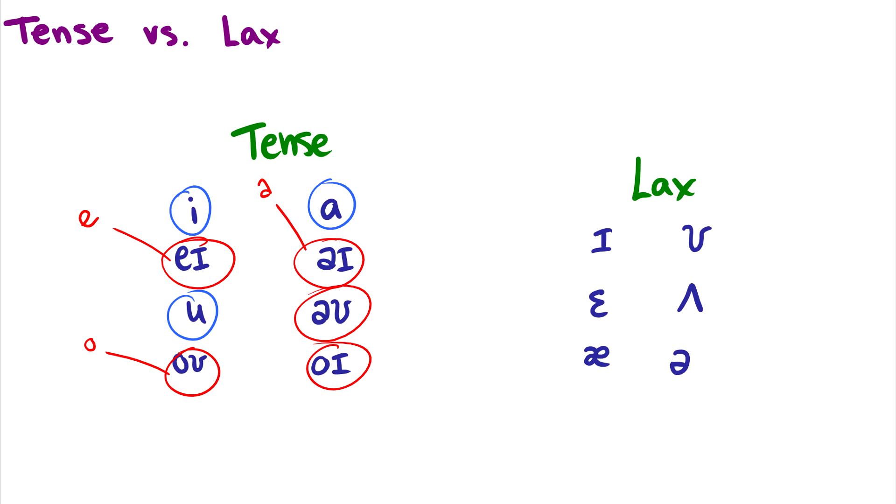Now the lax vowels are much less common. You have like i, so it's the lax version of i essentially. You have u, the lax version of u. You have ah, which is lax. You have your epsilon eh, which is lax. Then you have your schwa, which is lax because it's in unstressed positions. And then you have your uh, like in but, which is also lax.